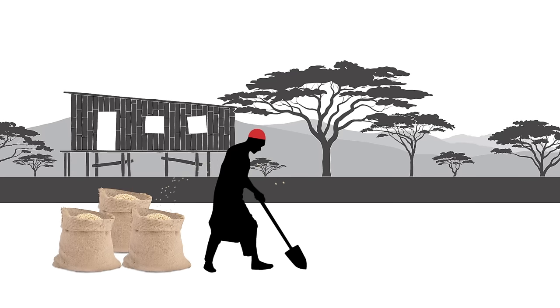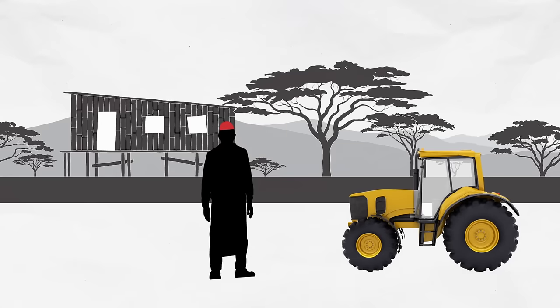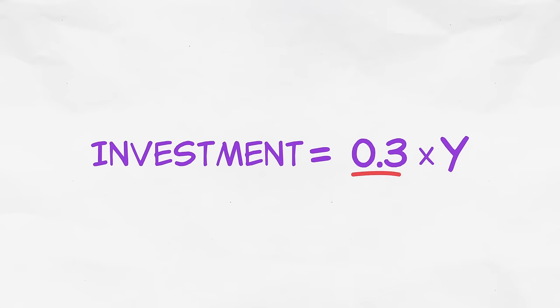Now let's add a new aspect to our model. Where does the money for capital accumulation come from? From savings and investment. When we create economic output, we can either consume it or save it. What we don't consume can be saved and invested in new capital. So suppose we invest a constant fraction of our output. Let's say we devote 3 of every 10 units of output, or 30% of output, to investment.